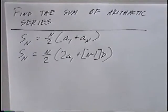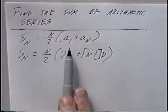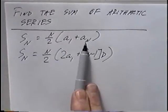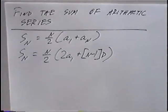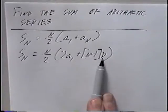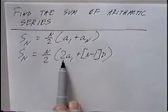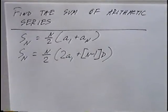The difference between them: the first formula uses the first term and last term, whereas the second formula uses the first term and the common difference. So depending on which variables you know, you can use either formula to solve the question.